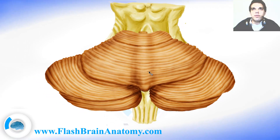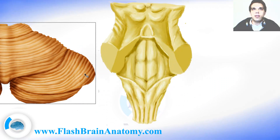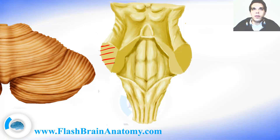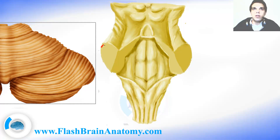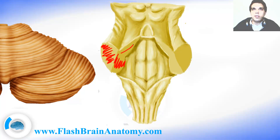Now if we simply cut the cerebellum off, this is what we would be able to see. We have cut the fibers that go in and leave the cerebellum, and they go through these structures called peduncles — the middle peduncle, the inferior peduncle, and the superior one. The same on the other side: the superior, inferior, and middle peduncle.